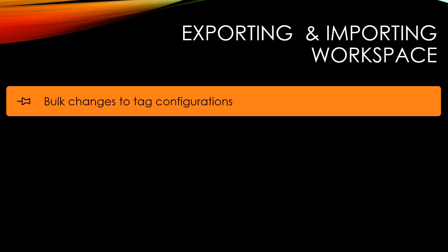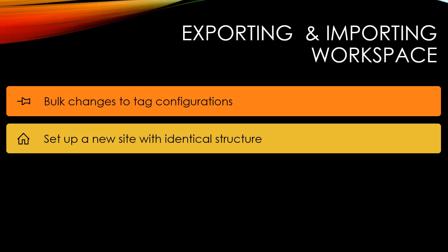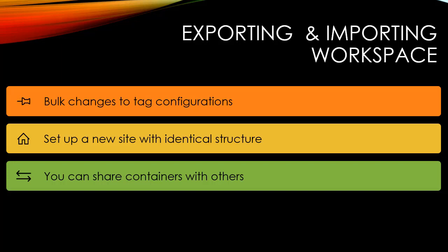The most common uses are for bulk changes to tag configuration. If you have a bunch of things you want to change, you can export the file, make changes, and then import it back. You can also set up a new site with an identical structure — using the same tags, triggers, and variables — by exporting your configuration and importing it into the new site. You can also share your containers with others so they can take the solution you've crafted and import it into their containers.